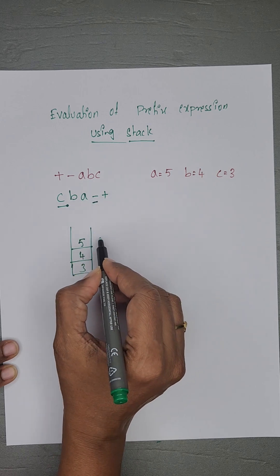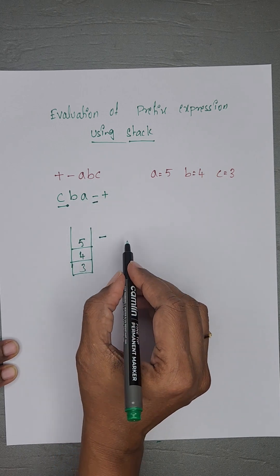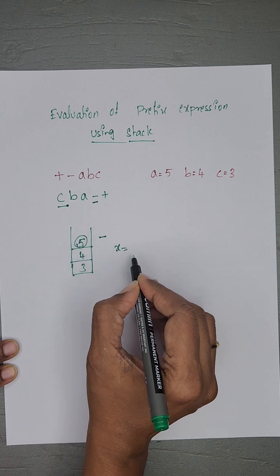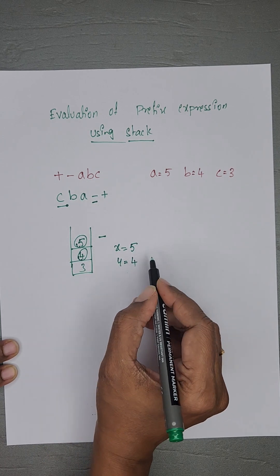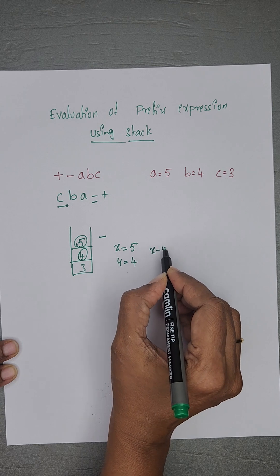The next character is an operator. If it is minus, pop two elements from the stack. Pop always removes the top element, that is 5. Set x equals 5. Again, y equals pop, which removes 4. Now perform x minus y.